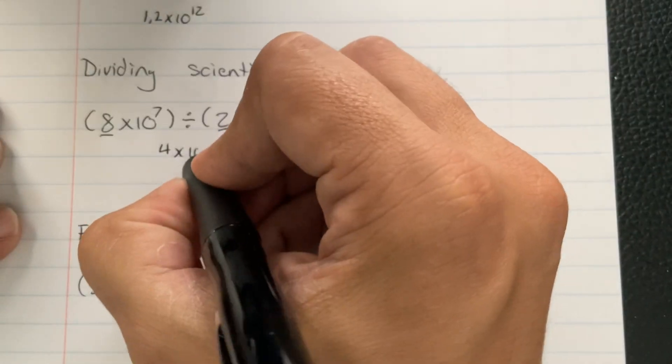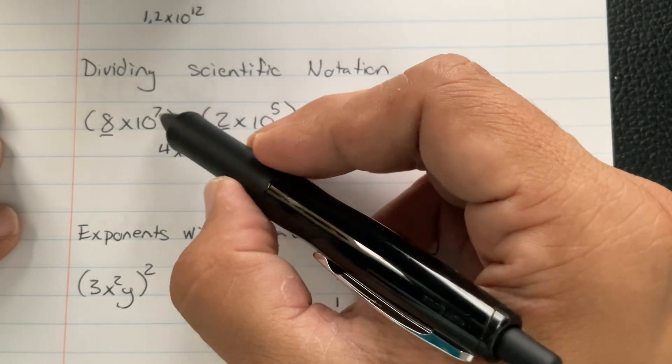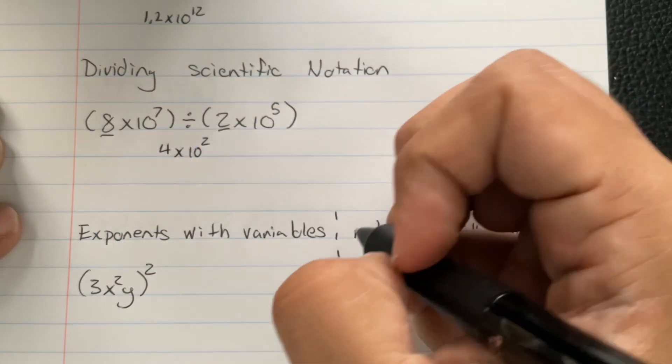And then we have to write times 10. And then the exponents, when you divide, subtract. So 7 minus 5, that's going to give us 2. And we're done.